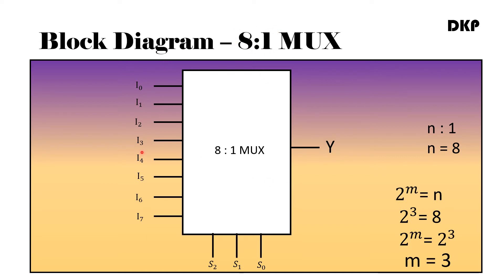These are the 8 inputs I0, I1, up to I7, and Y is the output, and it is having 3 select lines. So this is the block diagram of an 8-to-1 MUX.